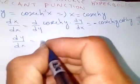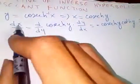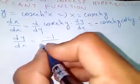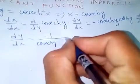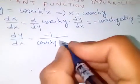...is equal to minus one. This is just one. However, cosecant hyperbolic of y and cotangent in terms of cosecant...